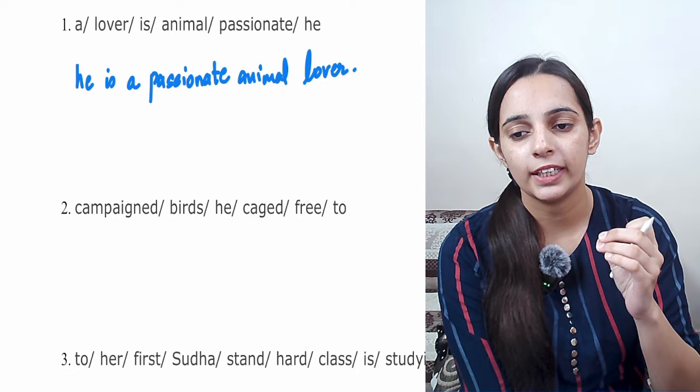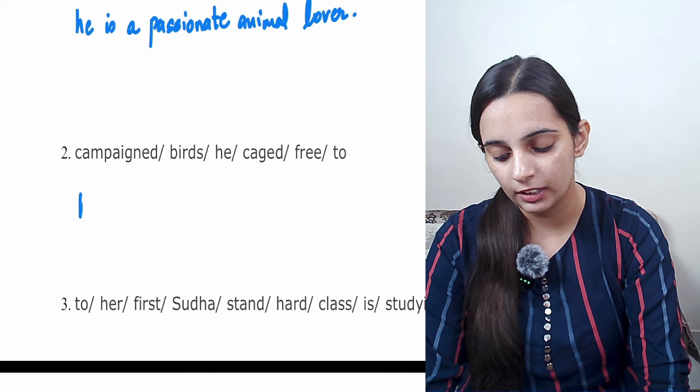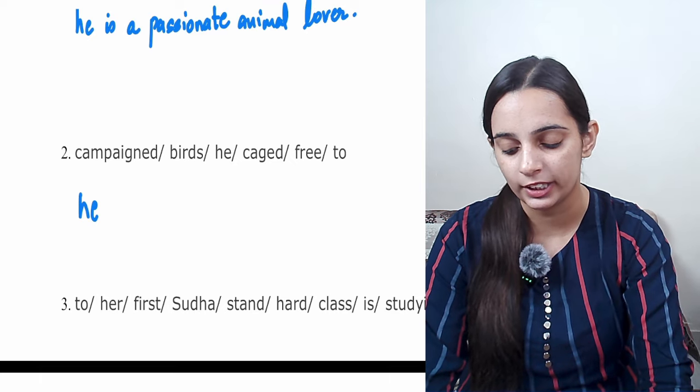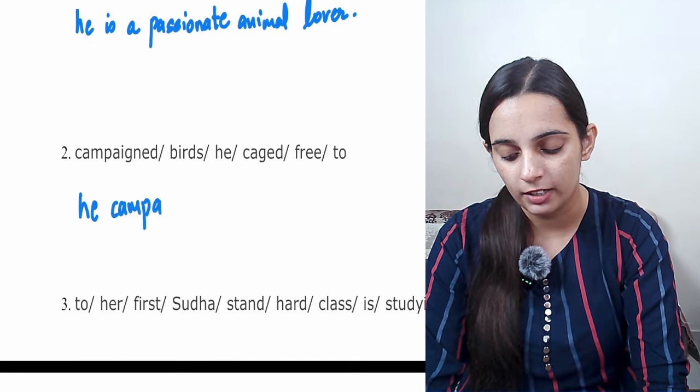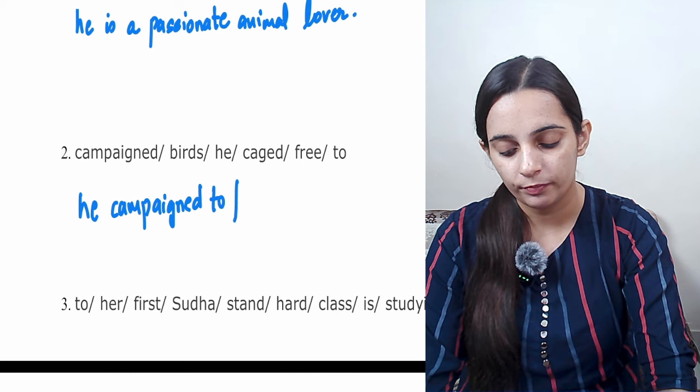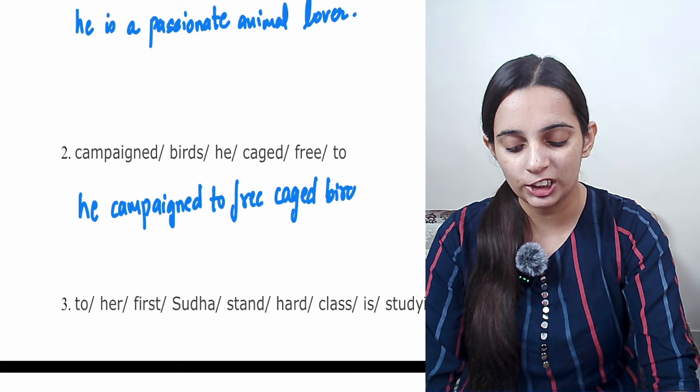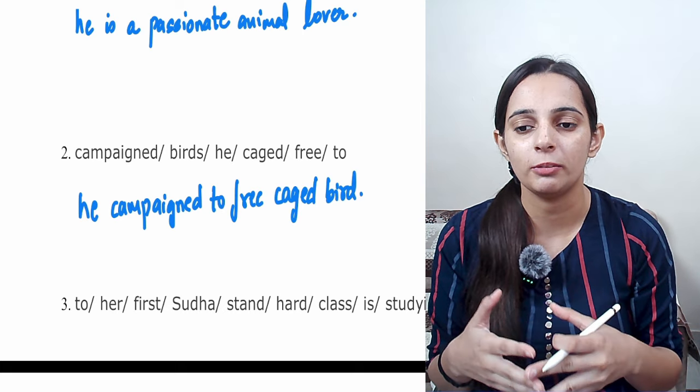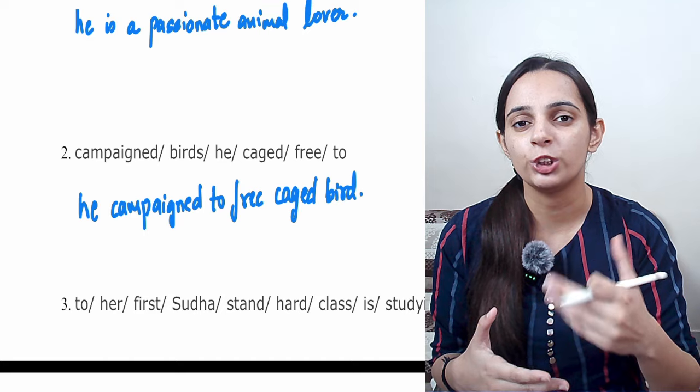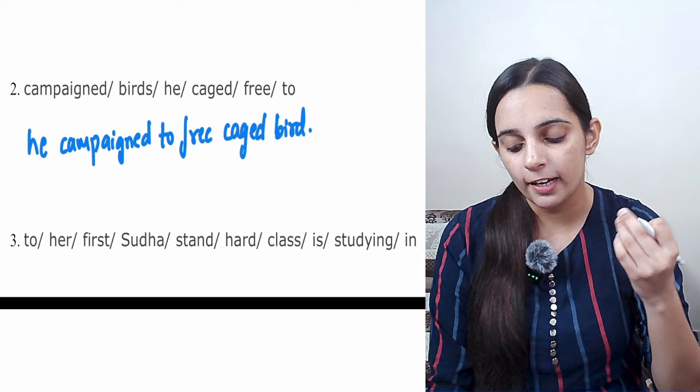Next: 'campaigned birds he caged free to'. This is a little tricky. So here we can write 'he campaigned to free caged birds'.